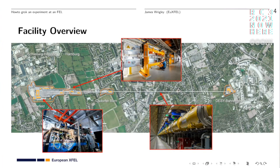After the radiation is generated from the electrons, the electrons are dumped — we don't need them anymore. The radiation continues down tunnels into the experimental hall at the second XFEL site in Schenefeld. There are six different instruments at the European XFEL, each focusing on different kinds of science, with their own experiment hutch, detectors, and equipment. You can see an instrument scientist looking into the sample changer — the radiation comes in from the right, hits the sample, and the result is recorded by an X-ray detector.